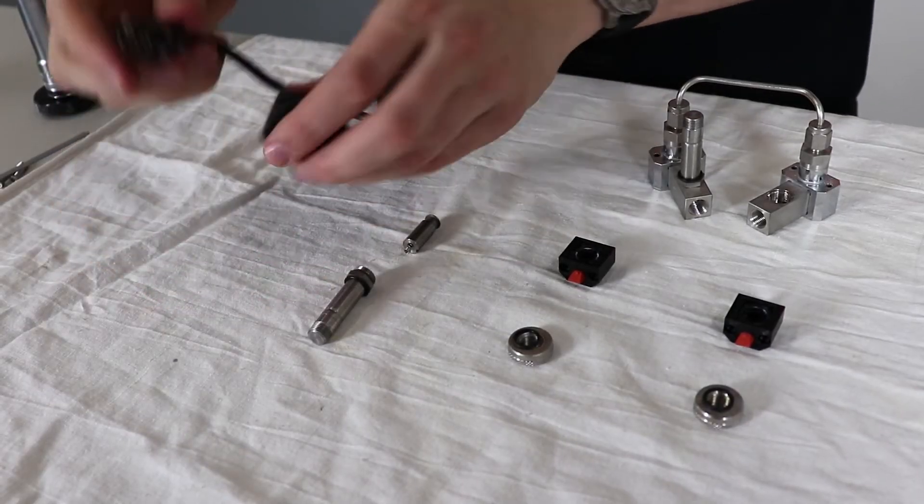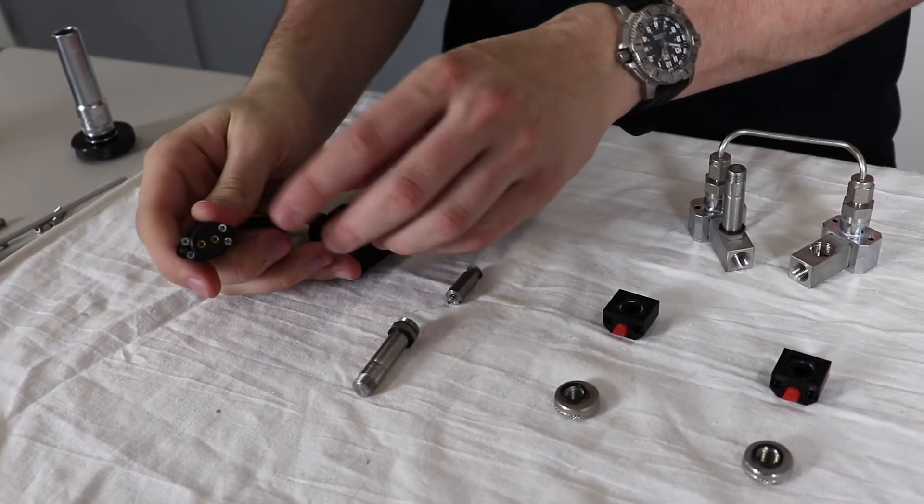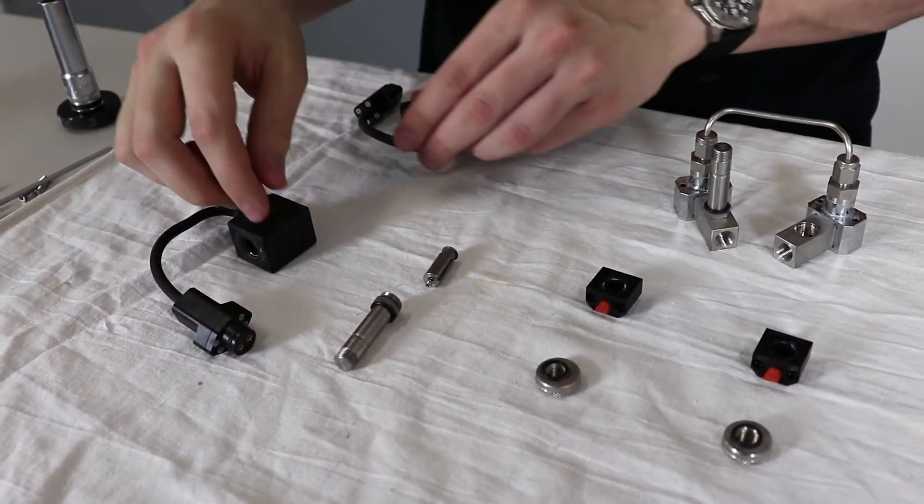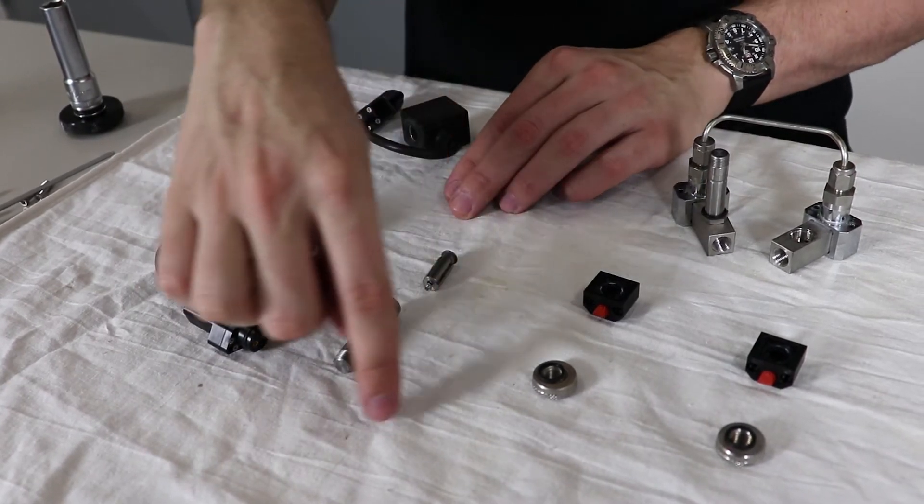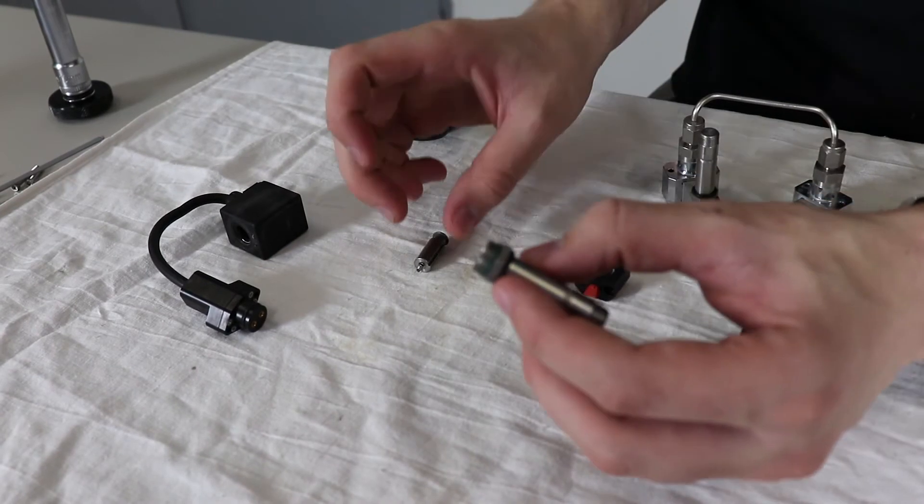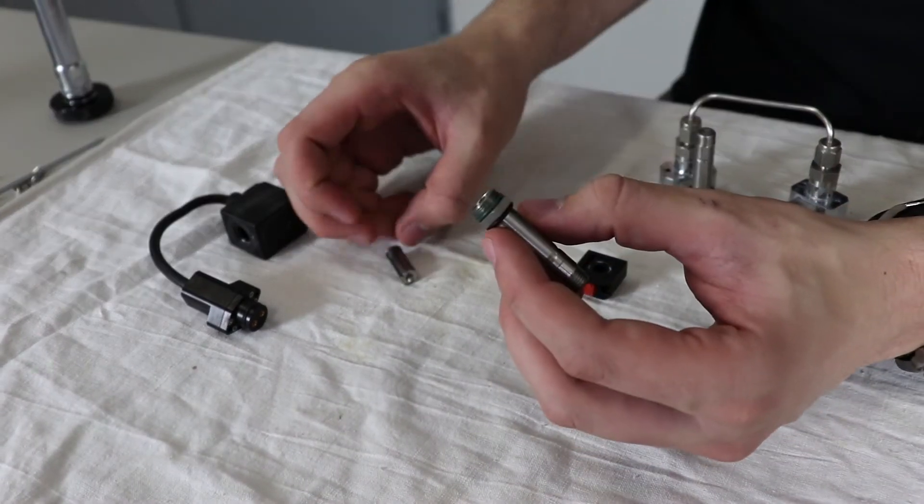Starting here we have the solenoid coils. They are connected to your control unit and they initiate the solenoid body right here. In the solenoid body, this is the piston and this is the solenoid itself.